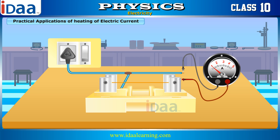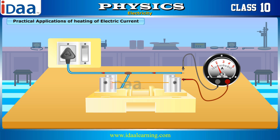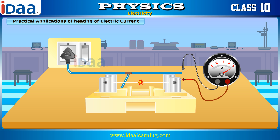The fuses used in our houses are also based on Joule's principle. Fuses are used to limit the amount of current that passes through the power lines. If there is an excess current in the circuit, the thin wire in the fuse gets overheated and melts. This opens the circuit and the current stops flowing, thus preventing the effects of the power surge.